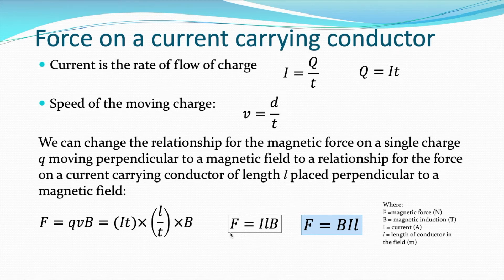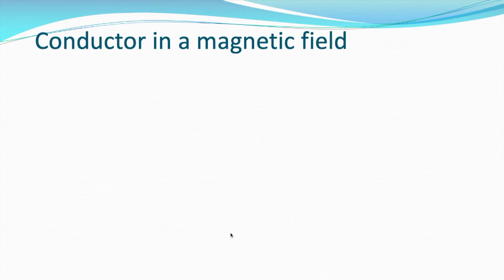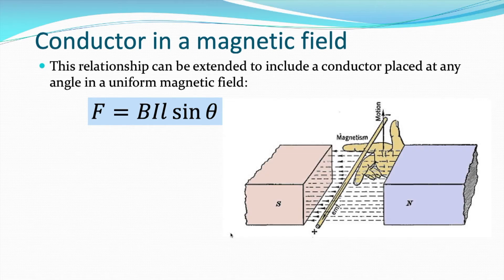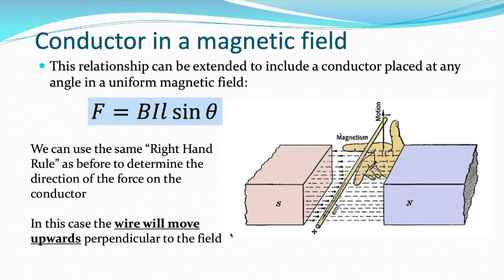This applies when the conductor is perpendicular to the field — at 90 degrees to the field lines. We can extend that relationship to include a conductor placed at any angle in a uniform magnetic field. When it's at 90 degrees, sine theta equals sine 90, which is 1. So F equals BIL is at a maximum when the conductor is perpendicular to the magnetic field. Using the right-hand rule, if we know the current, the size of the field, and the length of conductor in the field, we can calculate the force and determine its direction. In that diagram, the wire will move upwards because the field runs from north to south and the current flows from negative to positive — using the right-hand rule for electron flow.